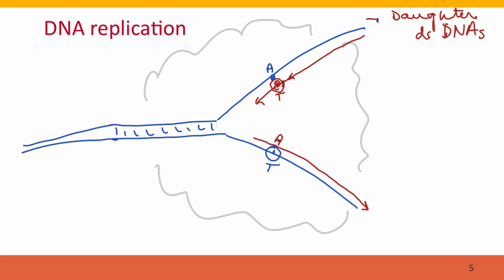The genetic information in each of these is identical to the information that was present when the two blue strands were originally paired with each other. Each daughter molecule consists of one new strand and one old strand physically, but genetically, they are both identical to the original double-stranded DNA.